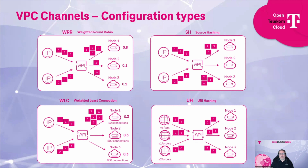VPC channels in the API Gateway define how the API accesses your backend systems. We support four types of VPC channel configurations that act similarly to a load balancer. The first is Weighted Round Robin (WRR), which provides equal distribution across connected backend nodes. You can define a weightage — for example, 80% on the first node, 10% on the second, and 10% on the third — or equally at 33% each.